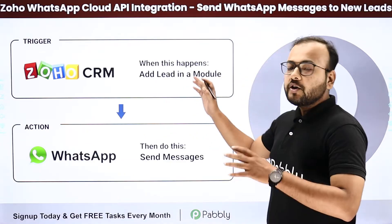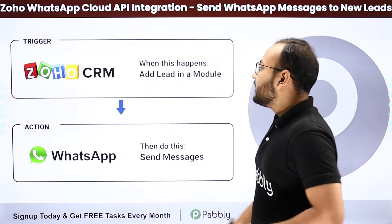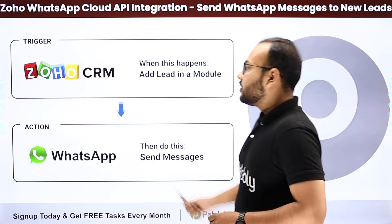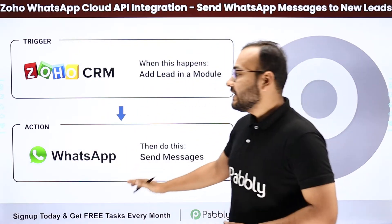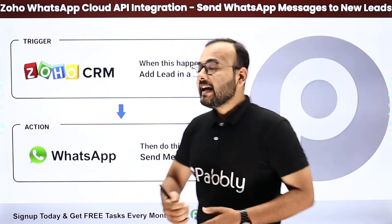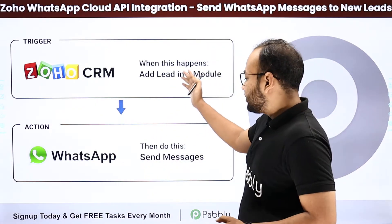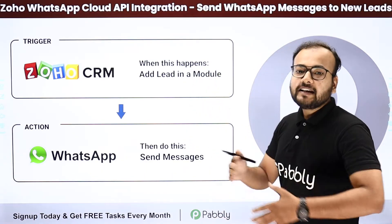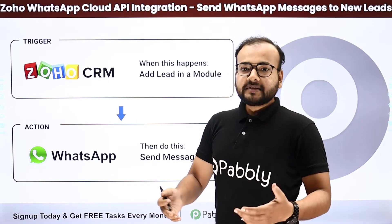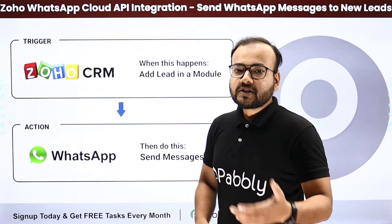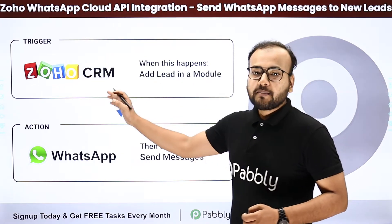The first automation we have is Zoho CRM and WhatsApp Cloud API. Here we are connecting Zoho CRM as the trigger application and WhatsApp as the action application, such that whenever you are going to add any lead in a module, a WhatsApp message will be delivered to that lead automatically. That message can be a welcoming message or any kind of promotional message — that's how you can engage your leads that you are adding into your CRM application.